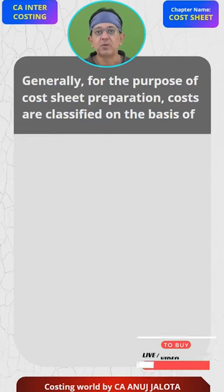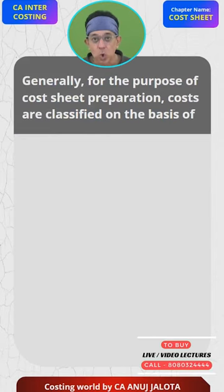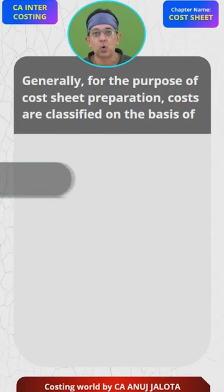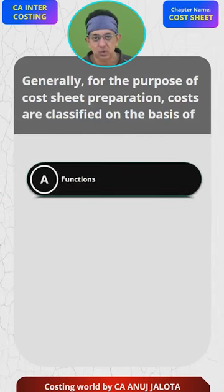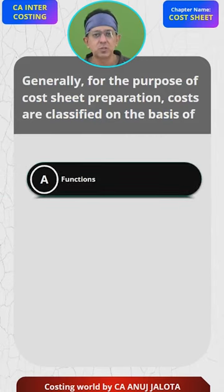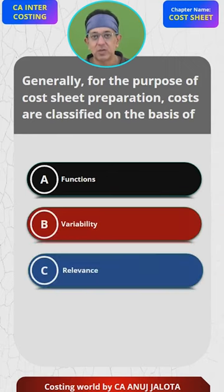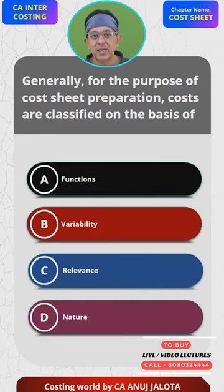Generally, for the purpose of cost sheet preparation, costs are classified on the basis of: A — Functions. B — Variability. C — Relevance. And D — Nature.